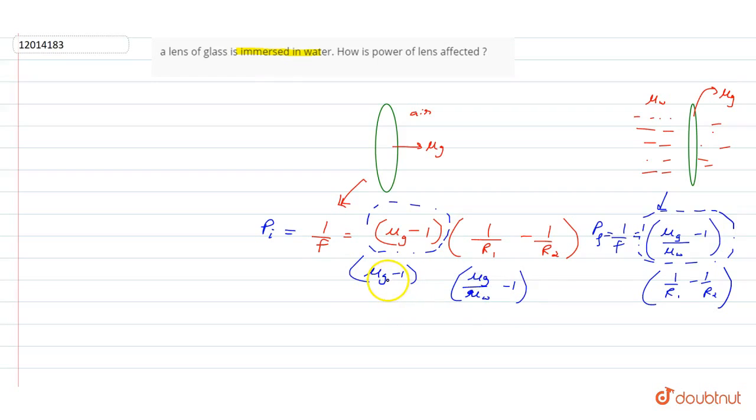So mu glass minus 1, that is greater than mu glass by mu water minus 1. We will put values.